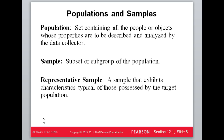The population is who we're studying — all the people or objects we're trying to describe with our data. A sample is a subset of that population, usually a drastically smaller percentage. A representative sample is what you're after: a small subset that has the same characteristics and targets the same percentages as the population. For instance, if 10% of the population is left-handed, you'd want around 10% of your sample to be left-handed.